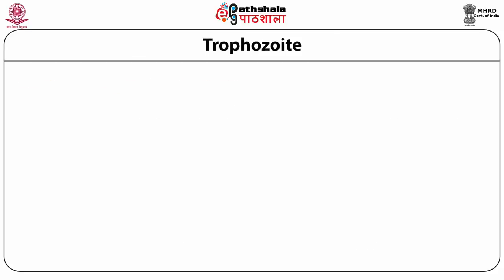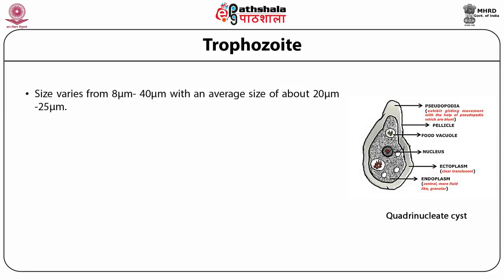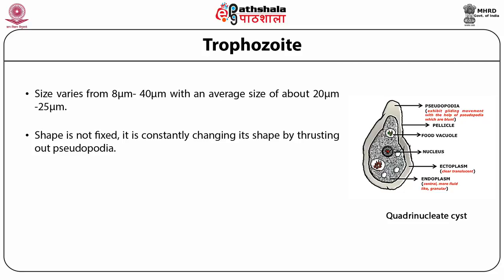The trophozoite is the motile, feeding stage. It moves about via pseudopodia, and its size varies from 8 µm to 40 µm, with an average of about 20–25 µm. Since it is an amoeba, the shape is not fixed — it constantly changes shape by thrusting out pseudopodia.